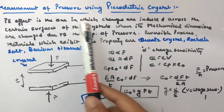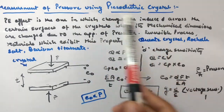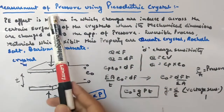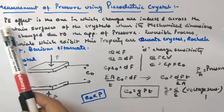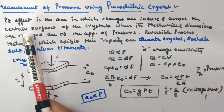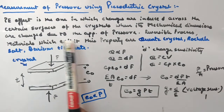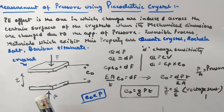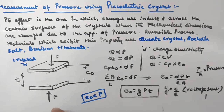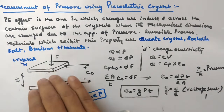Let's look at measurement of pressure using a piezoelectric crystal. The objective is to show the working of piezoelectric crystals, which are used to measure pressure. The piezoelectric effect is one in which charges are induced across certain surfaces of crystals when their mechanical dimensions are changed due to the application of pressure. These are piezoelectric crystals — if you apply pressure, there will be a change in their mechanical dimensions.